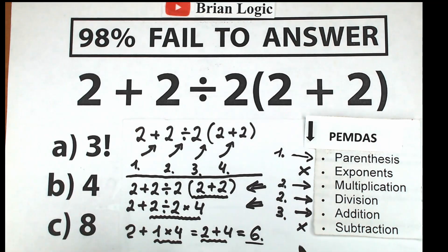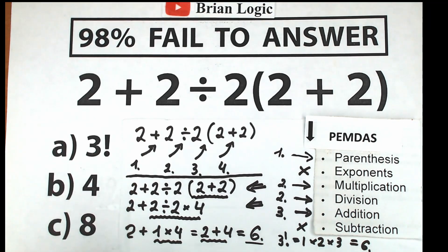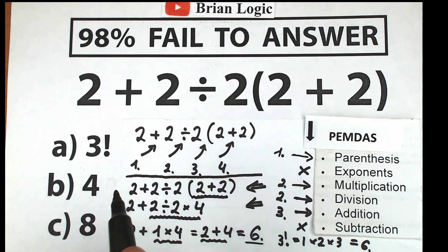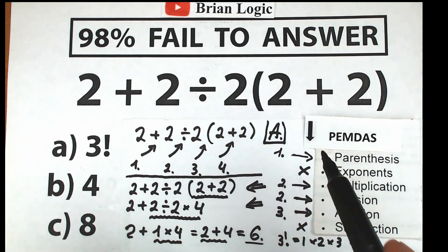How does 6 match option A? Option A is 3 factorial. Remember, a factorial is the product from 1 up to that number — so 3 factorial equals 1 times 2 times 3, which gives us 6. So the correct answer is option A. According to PEMDAS, the answer is 6, and that corresponds to 3 factorial — option A.